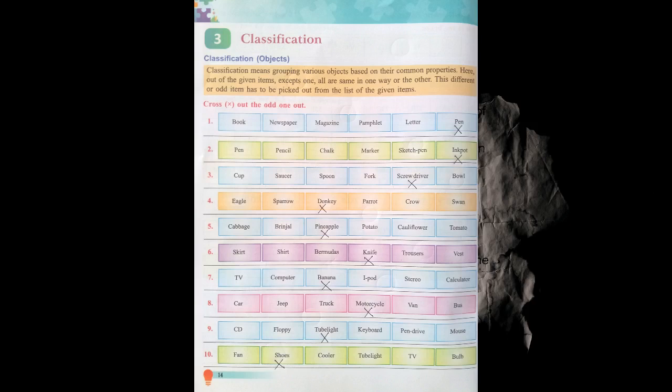Let's start with the first question: book, newspaper, magazine, pamphlet, letter and pen. Here pen is the odd one because except pen, all are reading items — pen is used to write. Now question number two: pen, pencil, chalk, marker, sketch pen and ink pot. Ink pot is the odd one because all the other options are used to write.